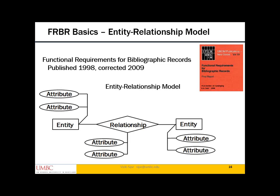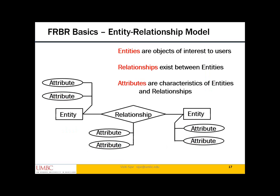Since FRBR is so important to RDA, let's look at some of the basics. FRBR uses an entity relationship model to represent the information in a bibliographic record. In this diagram, entities are rectangles, diamonds are relationships between entities, and ovals are attributes. This form of data modeling is common in relational database design. FRBR identifies the objects of interest to users of bibliographic records as entities, identifies relationships between entities, and then identifies characteristics — the attributes of both relationships and entities. The model is complete with these three parts: entities, relationships, and attributes.